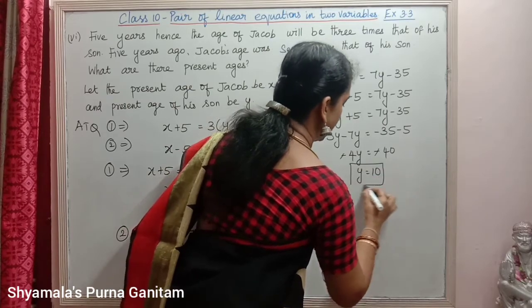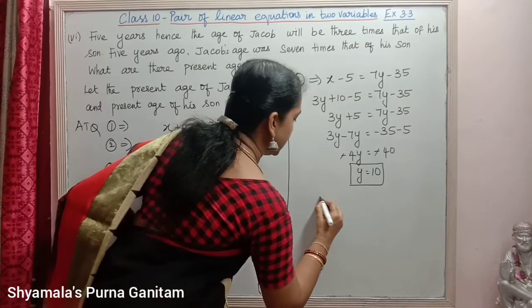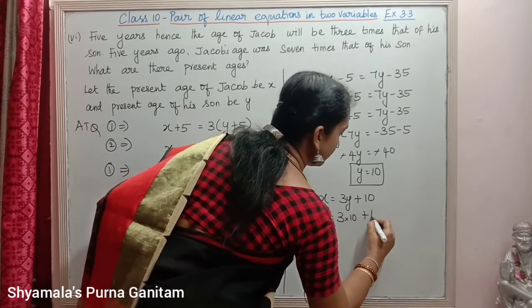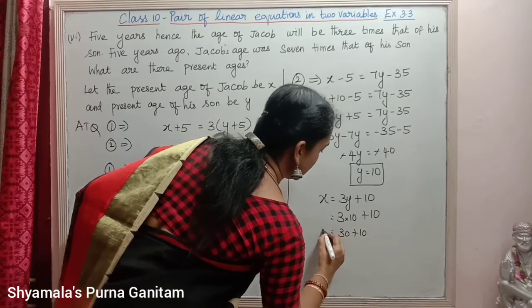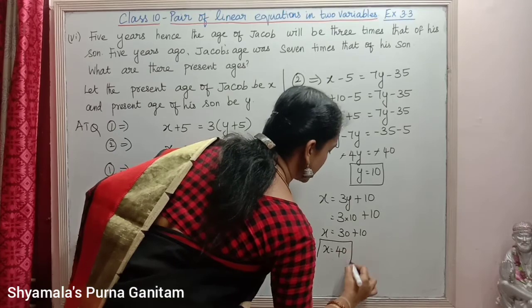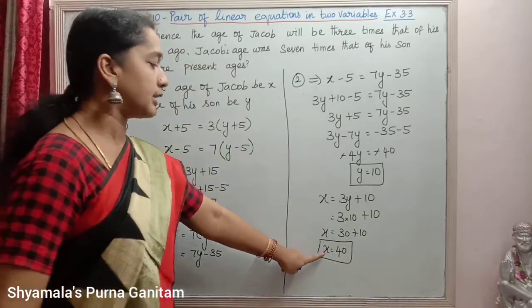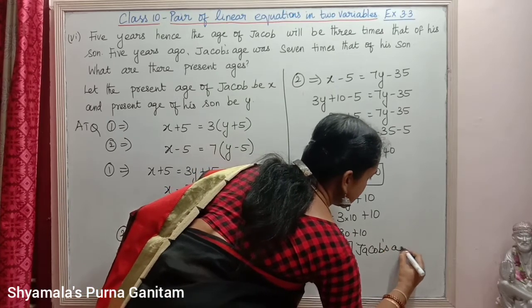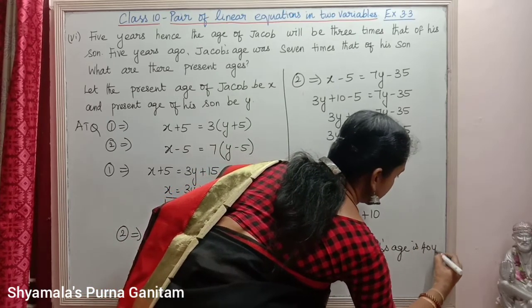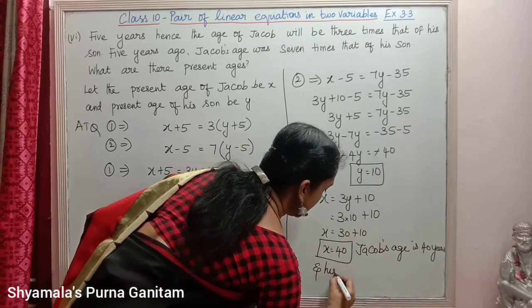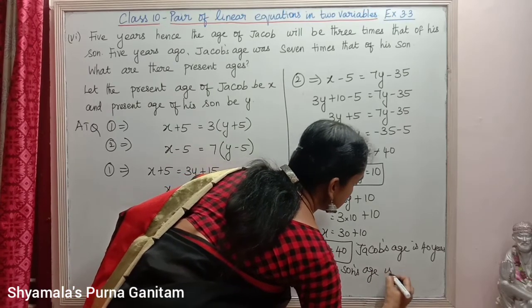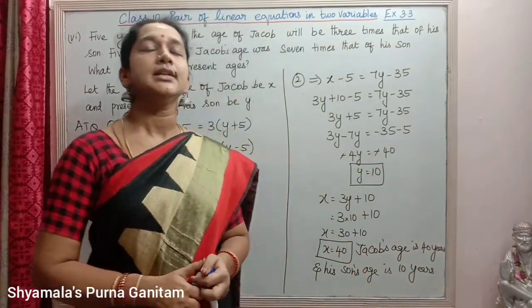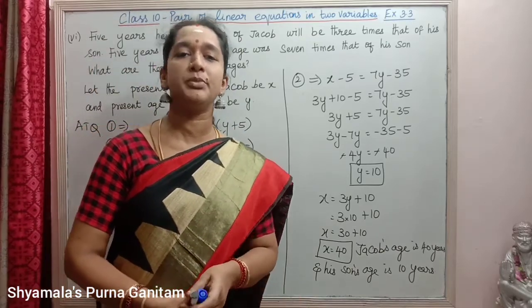So y equals 10. Now substituting this y value into x equals 3y plus 10: x equals 3 times 10 plus 10, equals 30 plus 10, so x equals 40. We are asked to find the present ages. Jacob's age is 40 years and his son's age is 10 years. This is the final answer. With this I am completing today's class. Whatever doubts you have, message me in the comment box. Thank you.